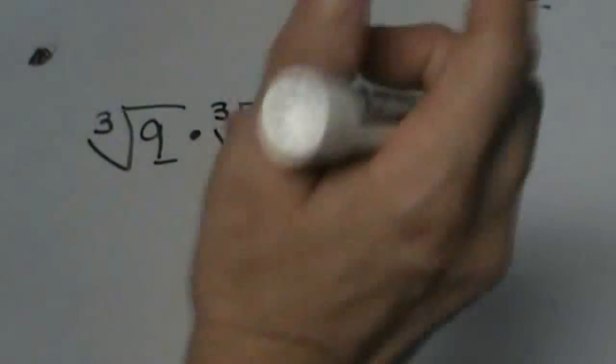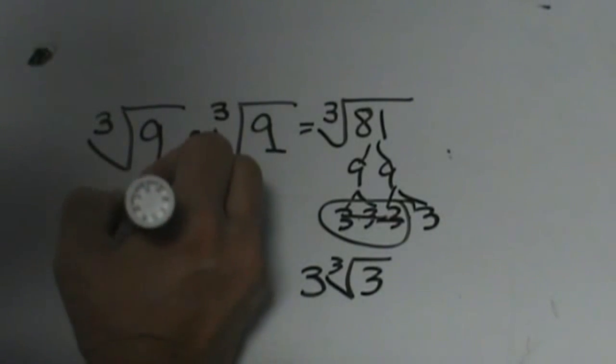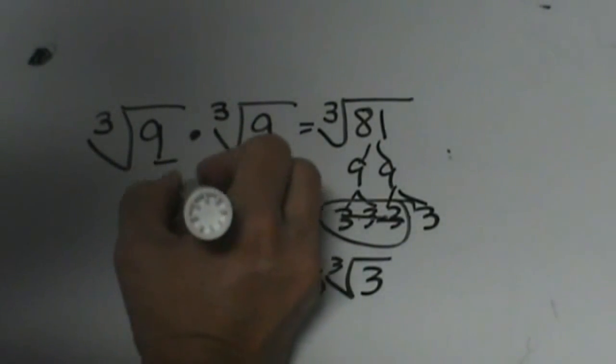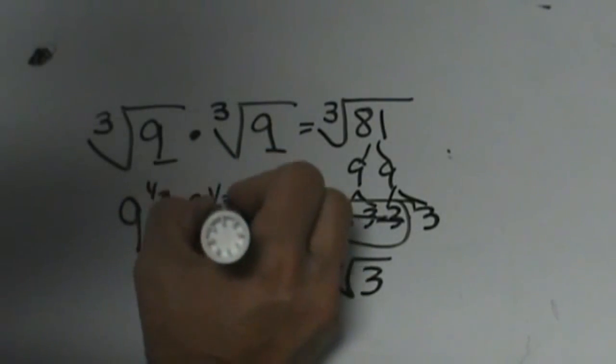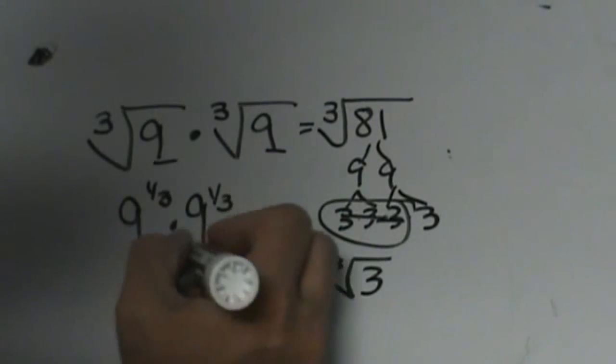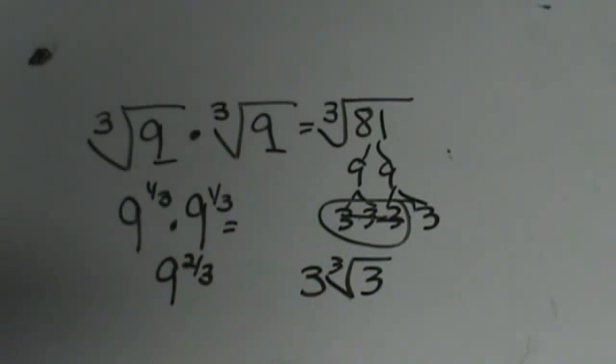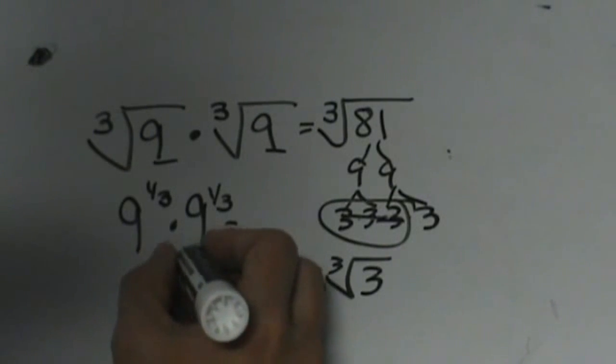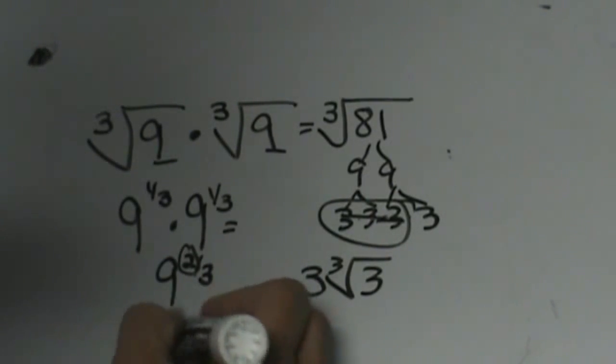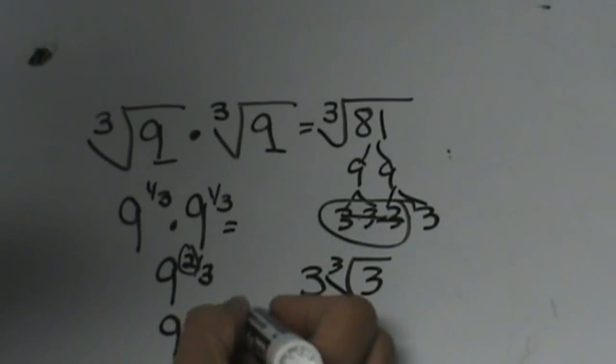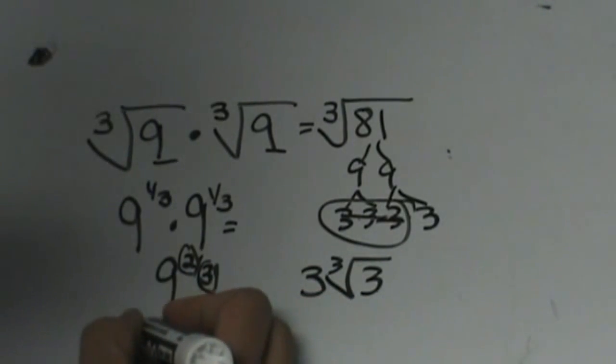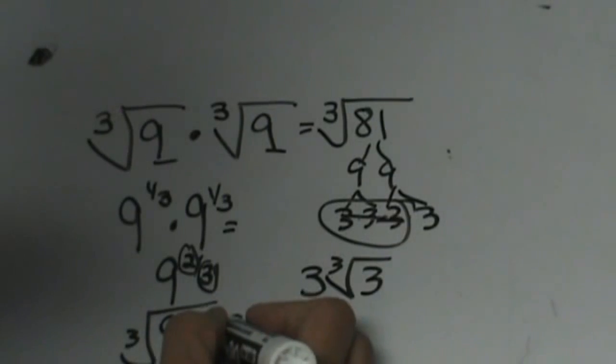Why can we do that? Thinking about radicals, because this is 9 to the 1/3 times 9 to the 1/3. Well, that becomes 9 to the 2/3. Well, 9 to the 2/3 is the same thing as taking 9 and squaring it. So if I take 9 and square it, I get 81. But remember, this base means a cube root, so I have to take the cube root of that answer.